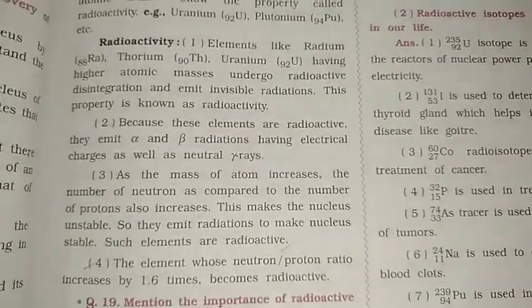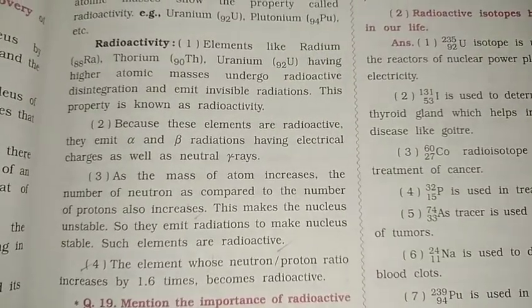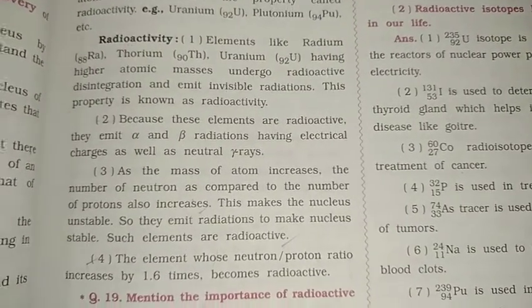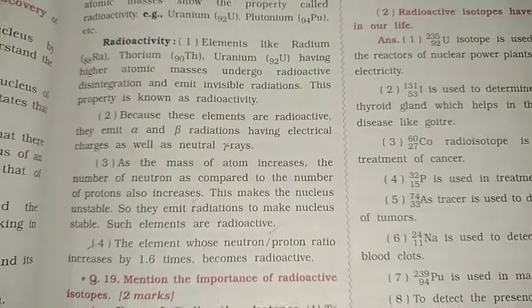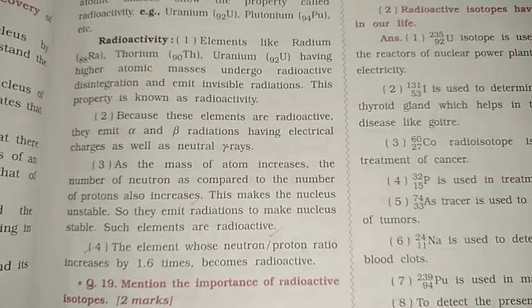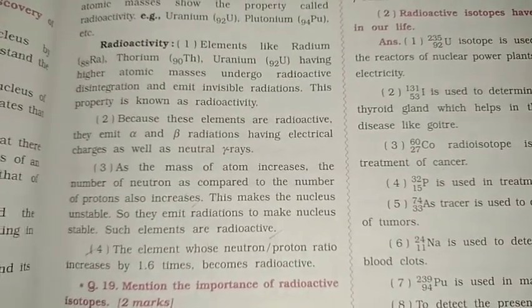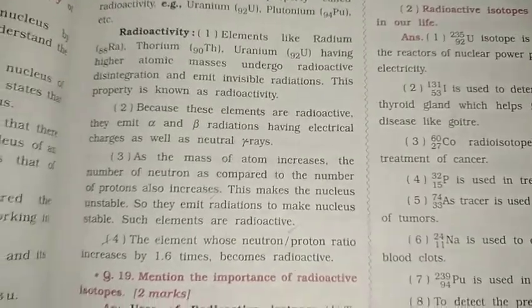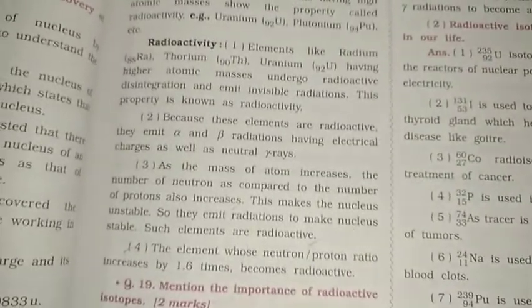Fourth point: The element whose neutron-to-proton ratio increases by more than 1.6 times becomes radioactive. This is important for the exam — if the neutron-to-proton ratio exceeds 1.6, the element becomes radioactive.